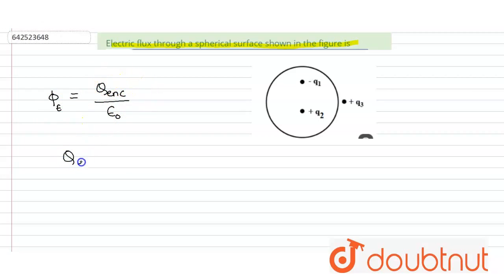So, here Q enclosed is only Q2 minus Q1. Q3 is outside the sphere, so it is not enclosed by the sphere.